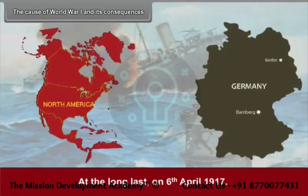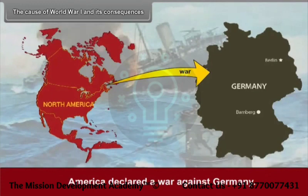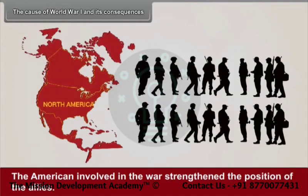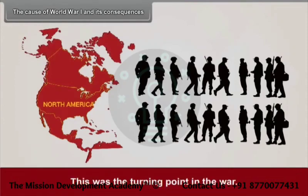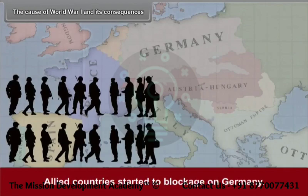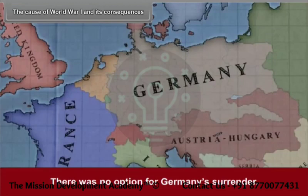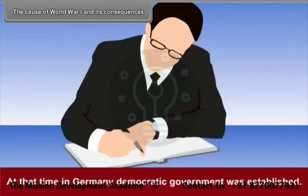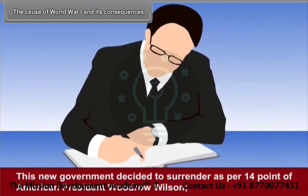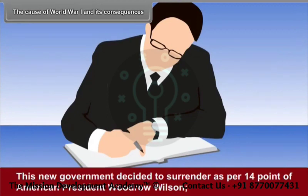At long last, on 6th April 1917, America declared war against Germany. The American involvement in the war threatened the position of the Allies. This was the turning point in the war. Allied countries started a blockade on Germany. With no option left, Germany surrendered. A democratic government was established in Germany, and this new government decided to surrender as per the 14 points of American President Woodrow Wilson.